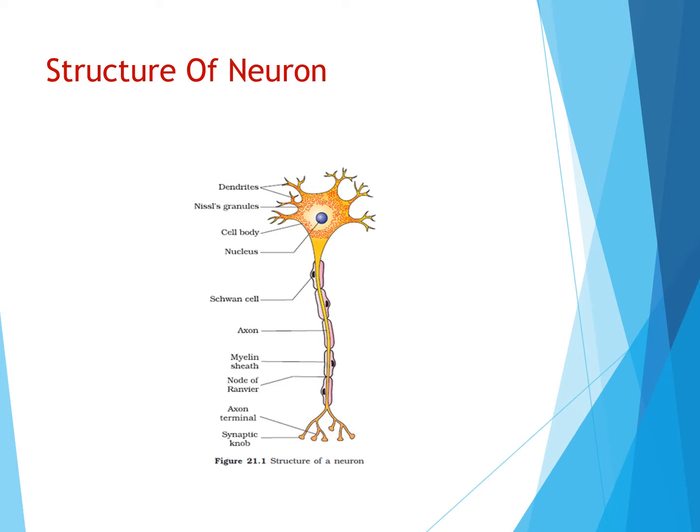The cell body consists of the nucleus, the main part of the neuron. For conduction of nerve impulses, there are dendrites — multiple of them — and an axon.